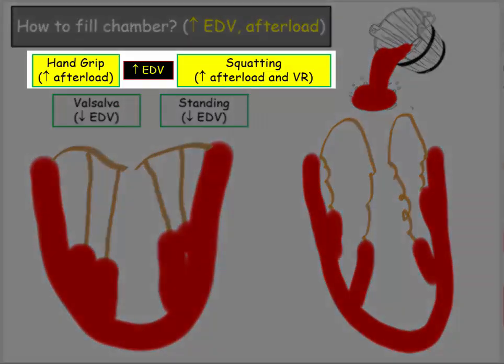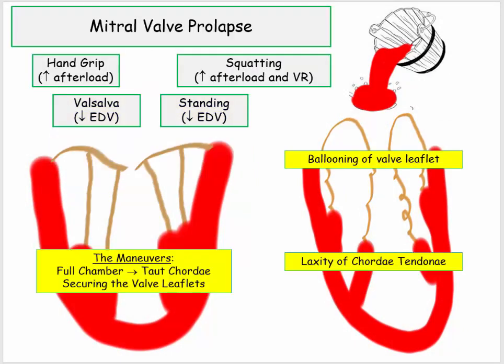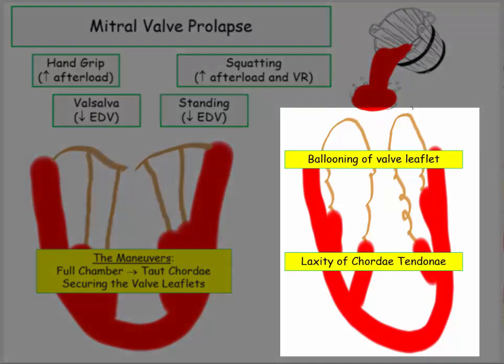In both maneuvers, we are increasing end-diastolic volume. The hand grip does so by increasing afterload. Squatting — my favorite maneuver — increases both afterload due to the physiologic stress of squatting and also increases venous return, making it the surest way to fill that chamber. Valsalva and standing both decrease venous return. The way to envision what is taking place is to focus on the chordae tendineae and their attachment to the valve leaflets.